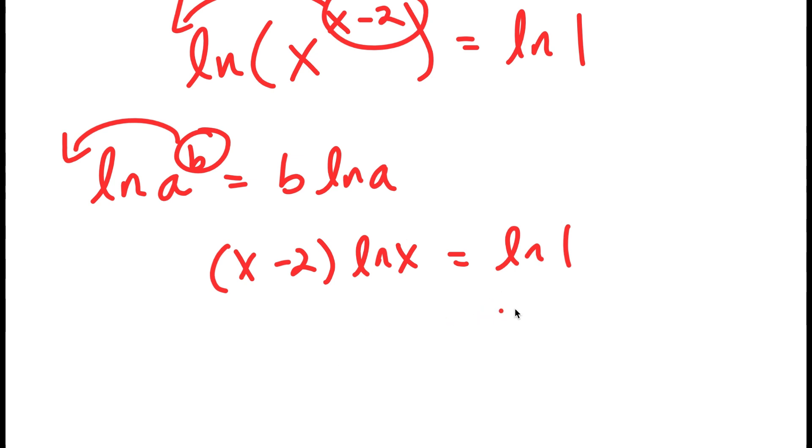Now, if you didn't already know, ln 1 is actually equal to 0, so I get x minus 2 times ln x is equal to 0.